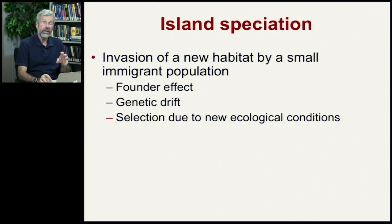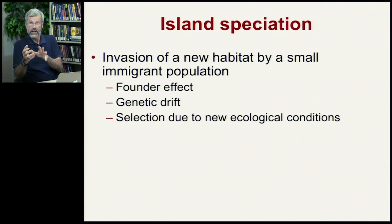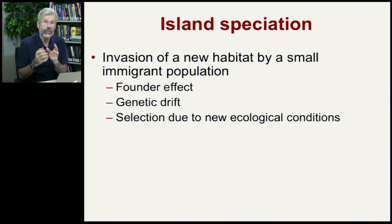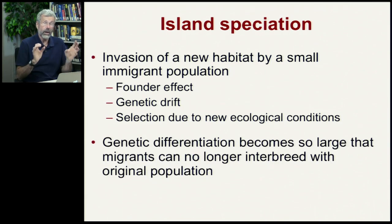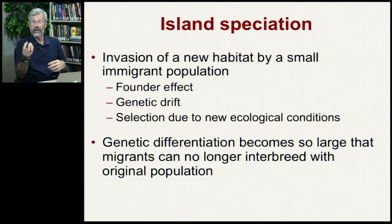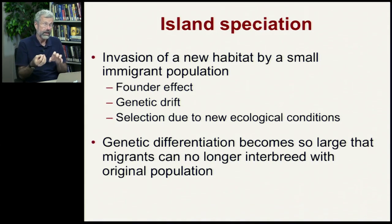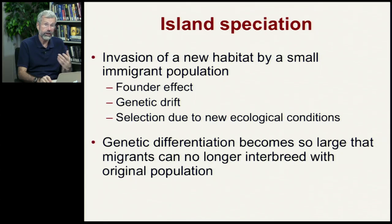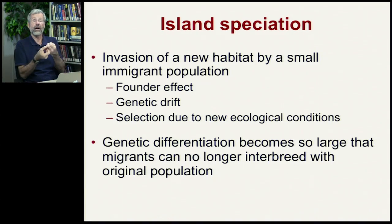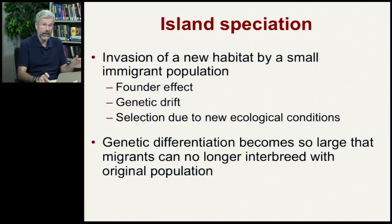If the island is ecologically distinct from the mainland, there can be selection favoring genotypes that do best in this new ecological circumstance. Through time, there may be an initial change because of genetic drift, then further differentiation because of selection. This genetic differentiation becomes so large that migrants onto the island can no longer interbreed with the original population — they wouldn't recognize each other, wouldn't want to mate, or if they did, the offspring may not survive.